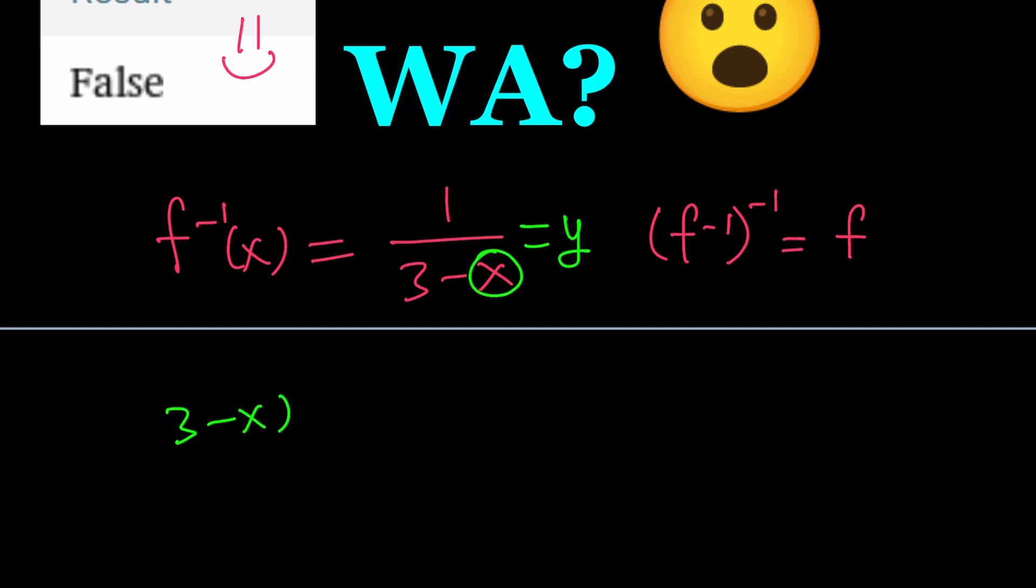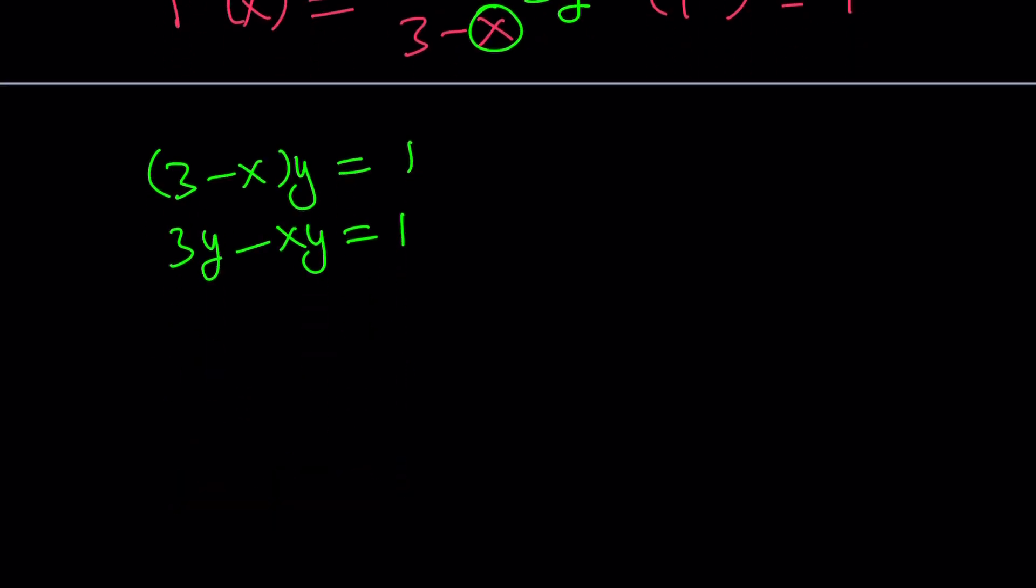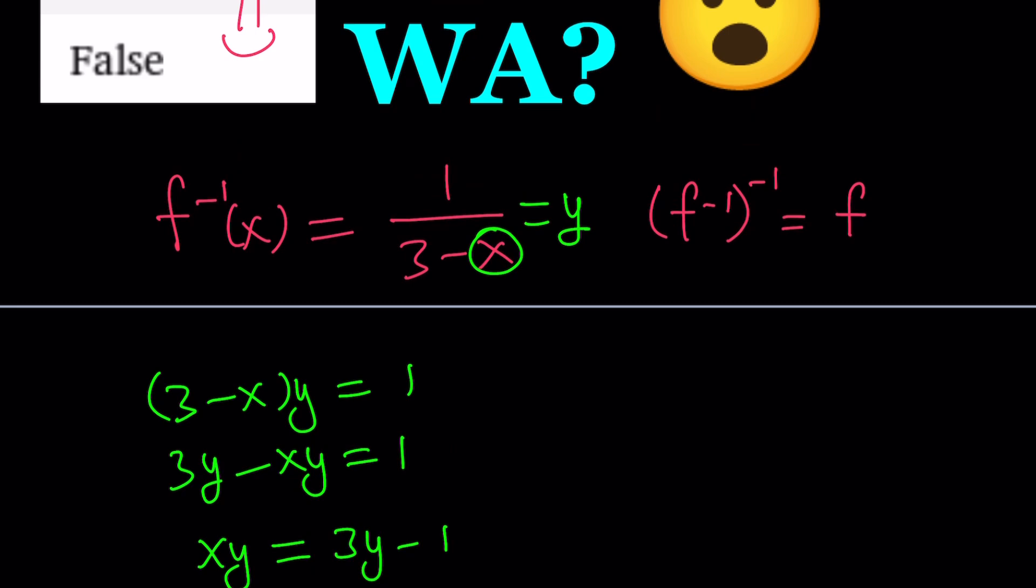3 minus x times y equals 1. 3y minus xy equals 1. And our goal is to solve for x because that's going to give us xy equals, let's see, 3y minus 1. x equals 3y minus 1 over y.